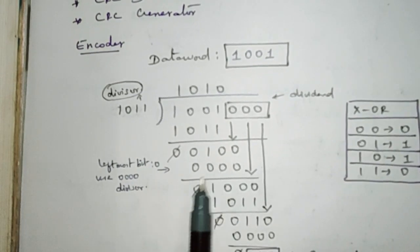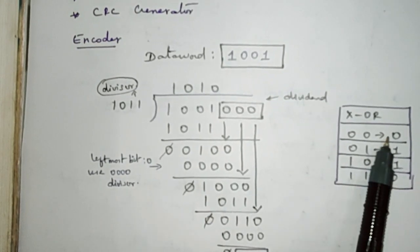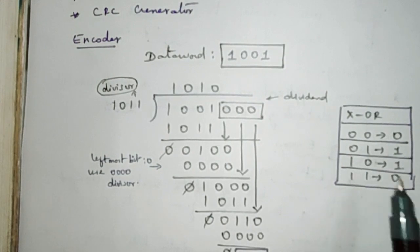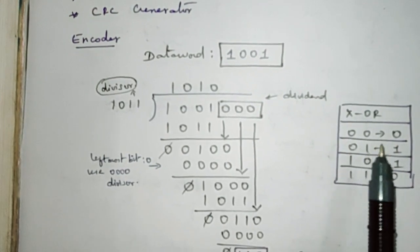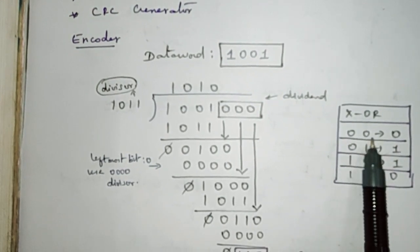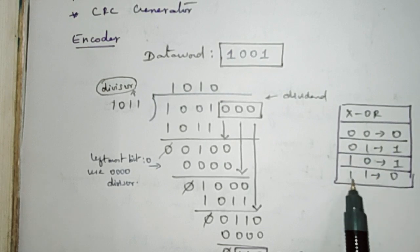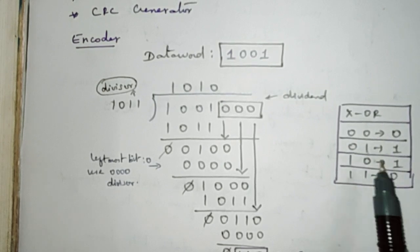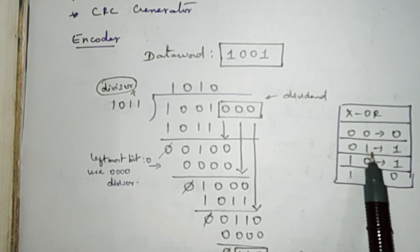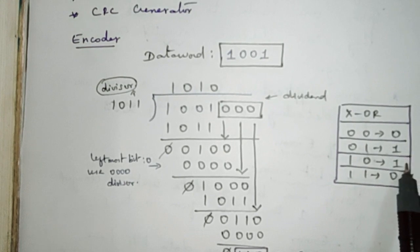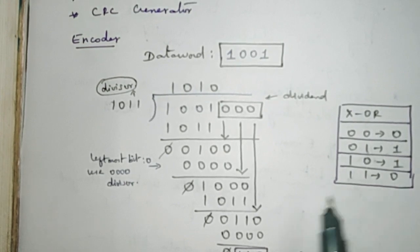In this operation we are going to perform XOR operation. As we know, when two bits are the same — 0,0 or 1,1 — the result is 0, and when the bits are different — 0,1 or 1,0 — the answer will be 1. So that is the XOR operation.